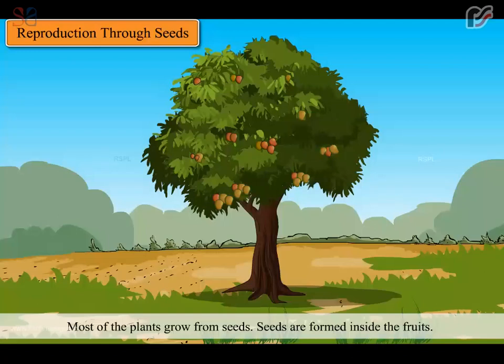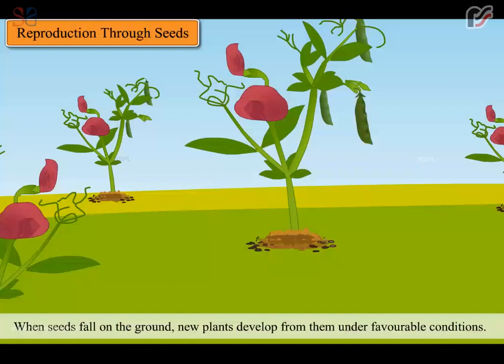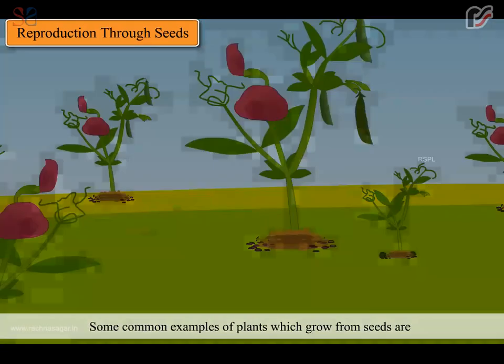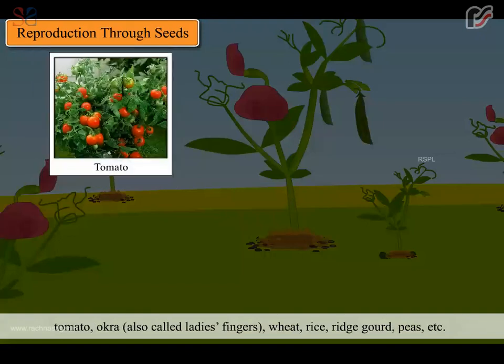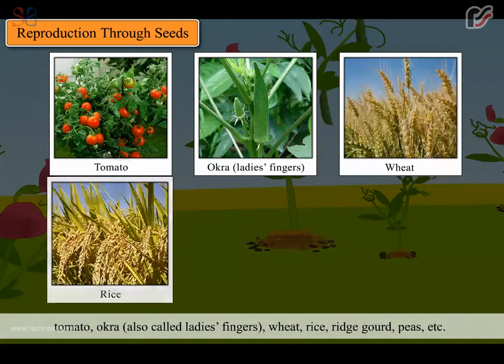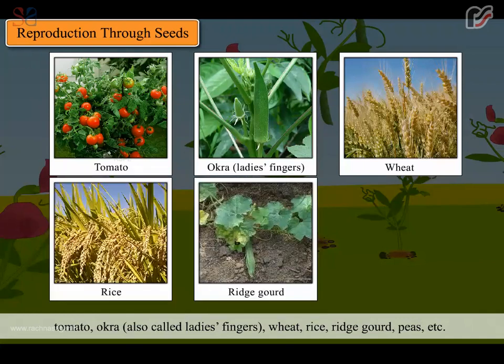Most of the plants grow from seeds. Seeds are formed inside the fruits. When seeds fall on the ground, new plants develop from them under favorable conditions. Some common examples of plants which grow from seeds are tomato, okra (also called ladies' fingers), wheat, rice, ridge gourd, peas etc.